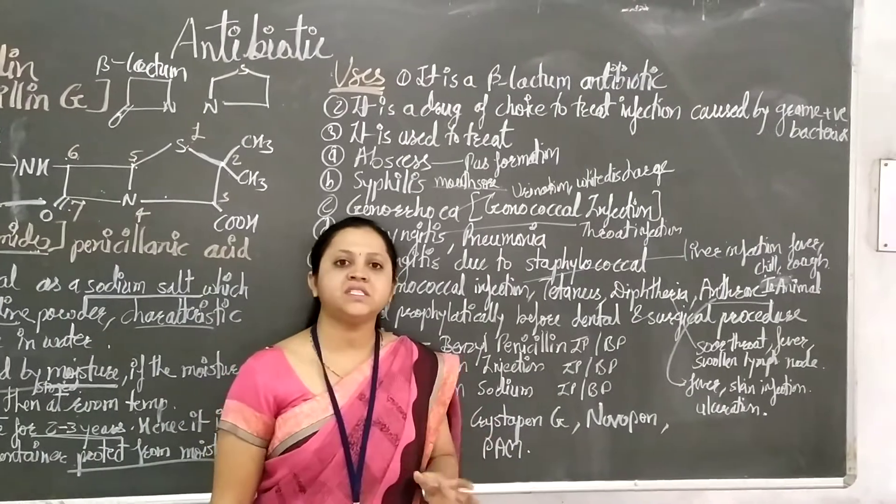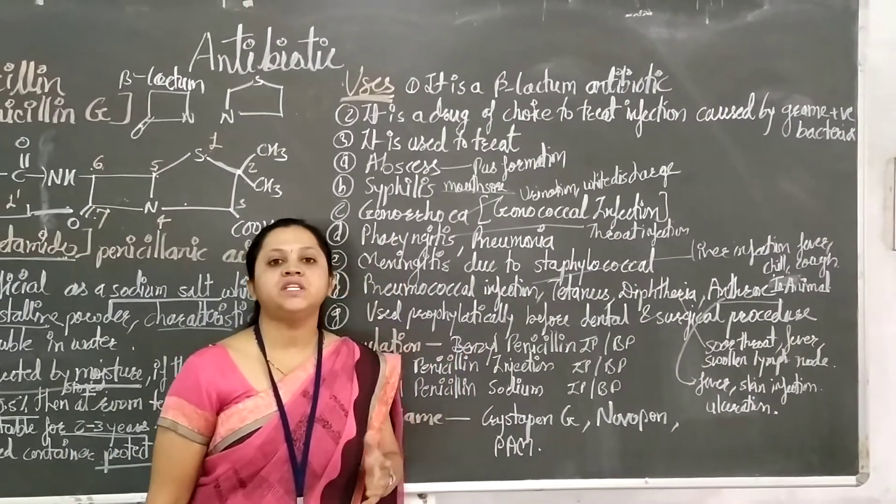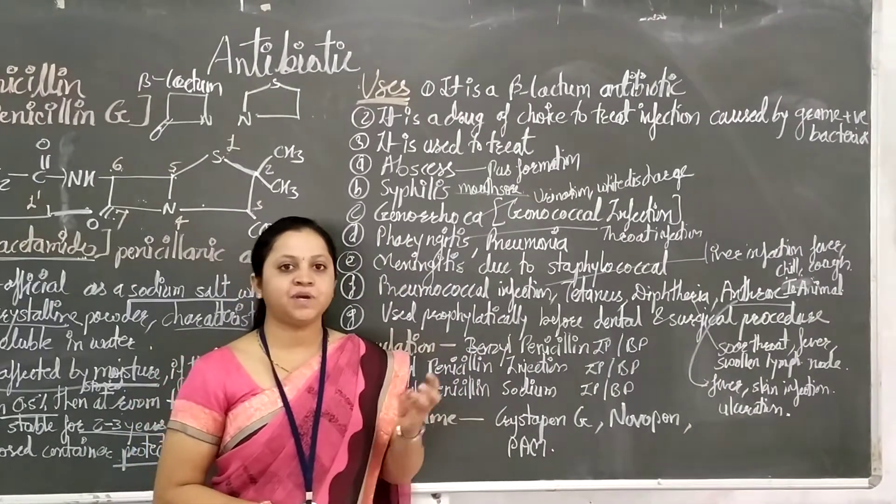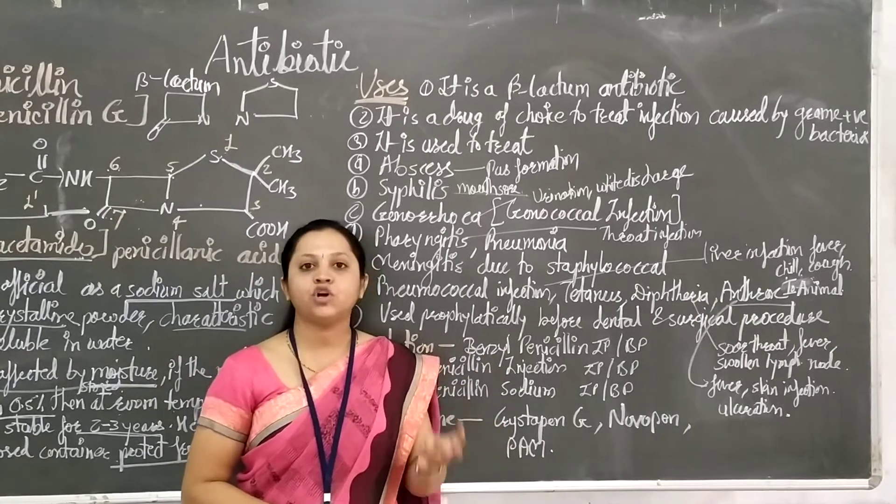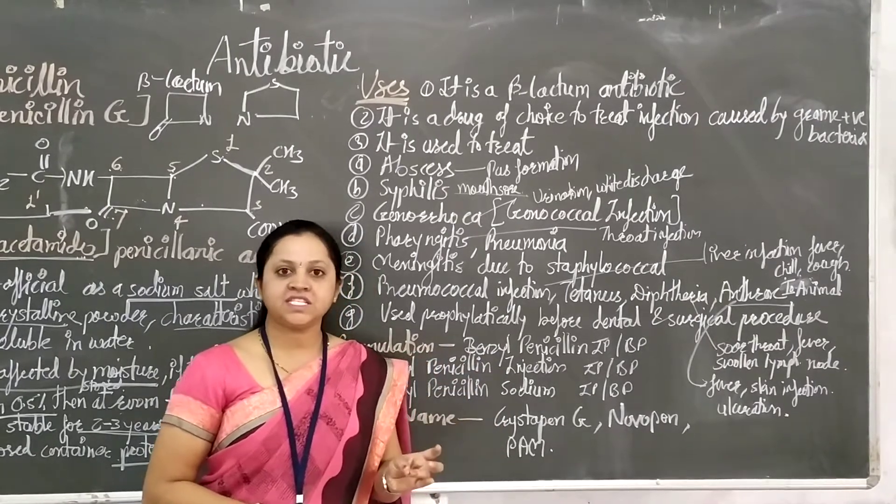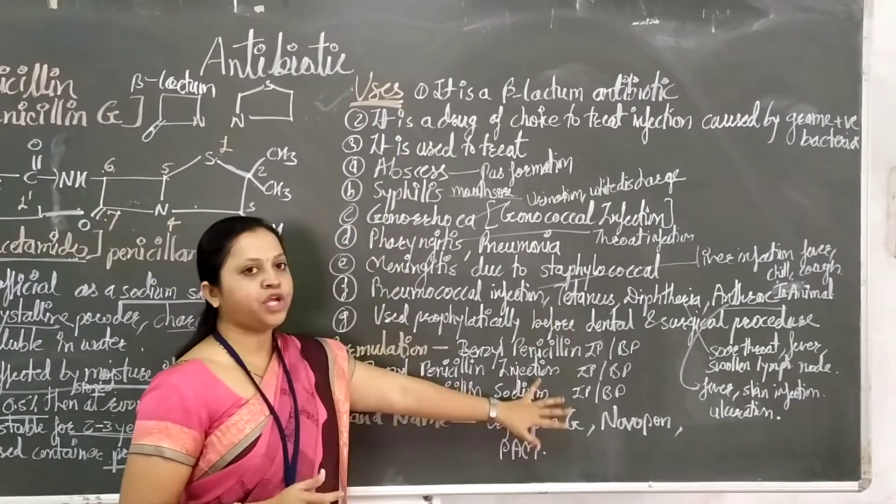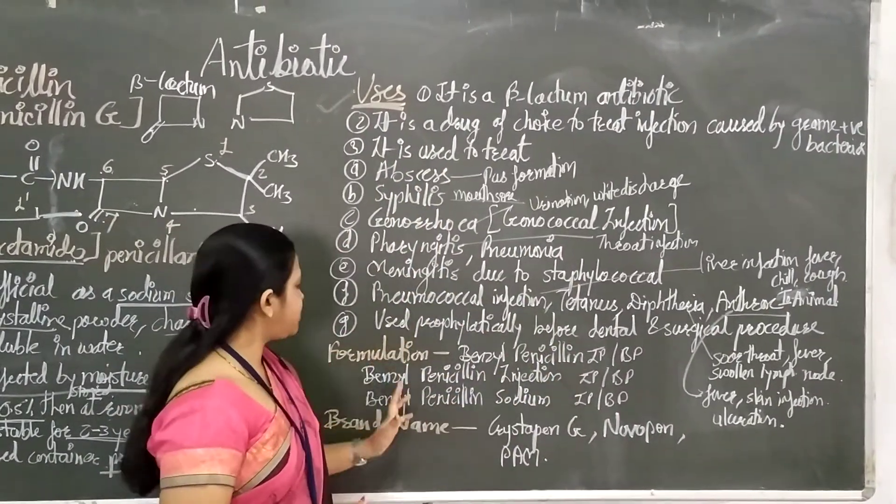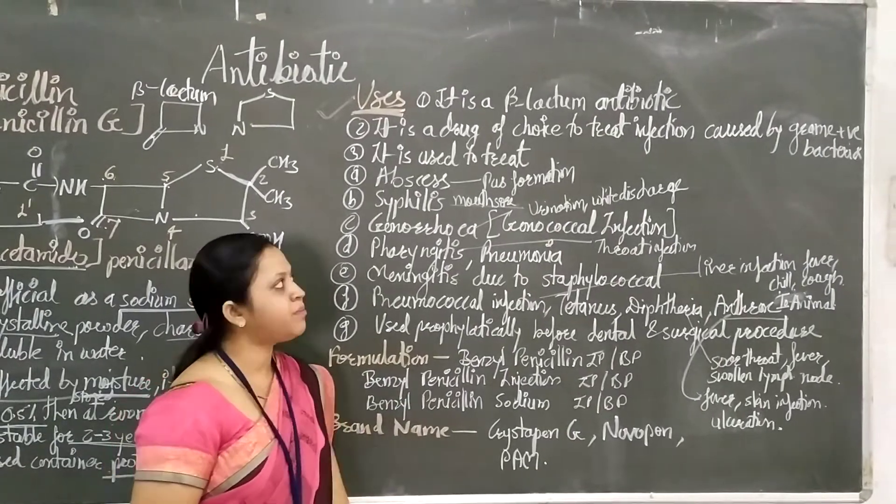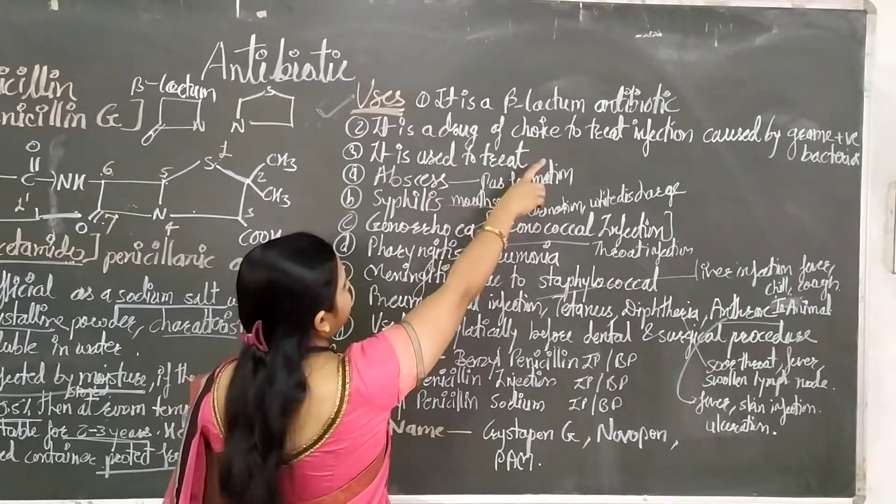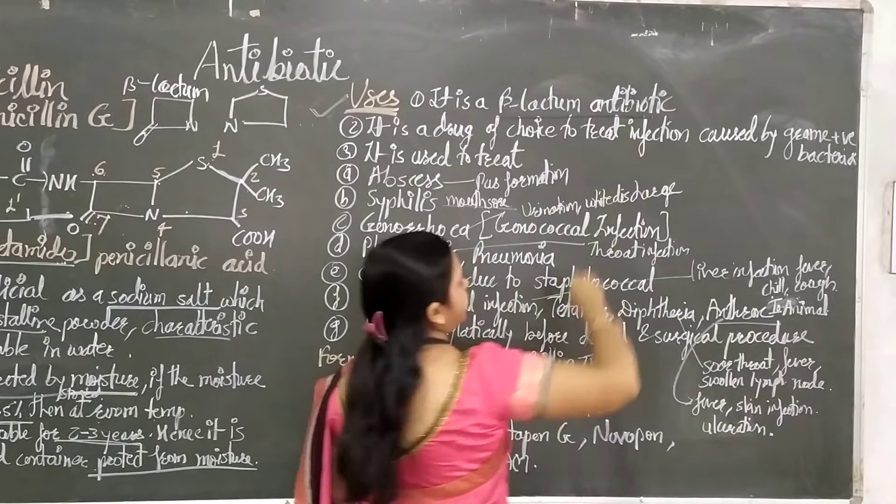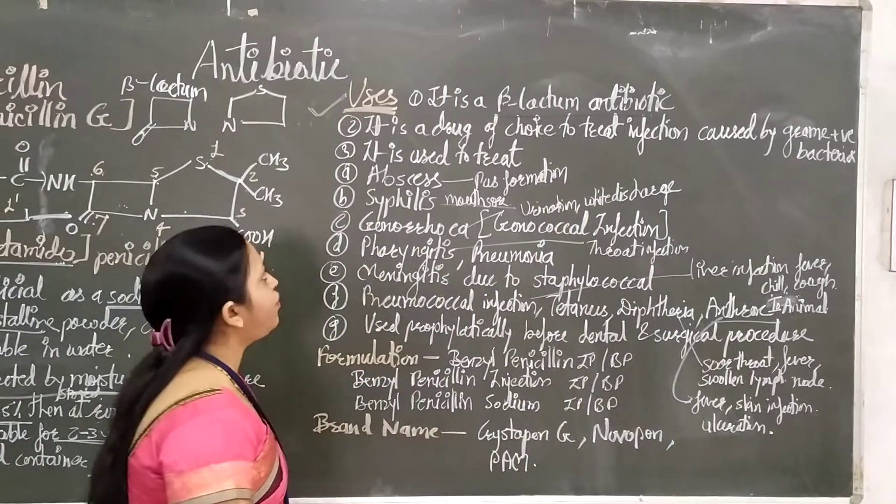Uses are very important for the whole penicillin category and its derivatives - benzyl penicillin, amoxicillin, phenoxymethyl penicillin, cloxacillin, carbenicillin. These are all derivatives of the penicillin group, so you can see similar uses. First, it is a beta-lactam antibiotic, already categorized as a narrow-spectrum antibiotic.